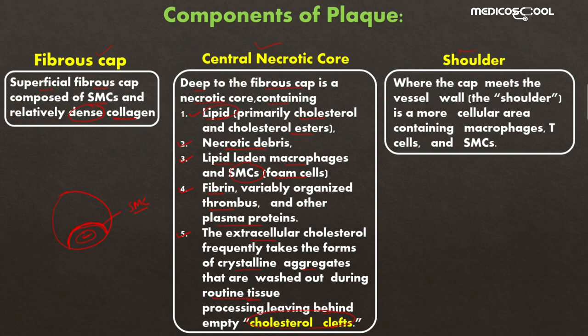The third component of the plaque is the shoulder. The shoulder is where the fibrous cap and the vessel wall meet. It is a more cellular area containing a large number of macrophages, T cells, and smooth muscle cells. These are the three components of the plaque: the fibrous cap, the central necrotic core, and the shoulder, along with their compositions.